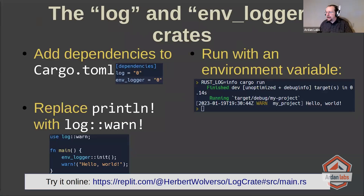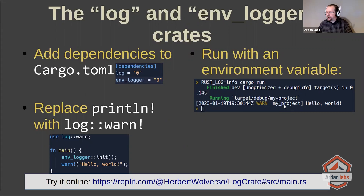And the output is right there on the screen. As you can see, it adds a nice timestamp for you and indicates that it's a warning from just my project. If you are running in nested crates because you have a large project, it will actually tell you which of the crates just issued the warning. And that can be extremely helpful if you have all your error messages filtering up through the result system.